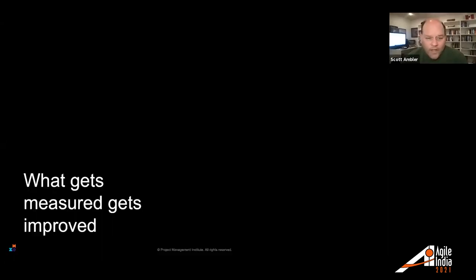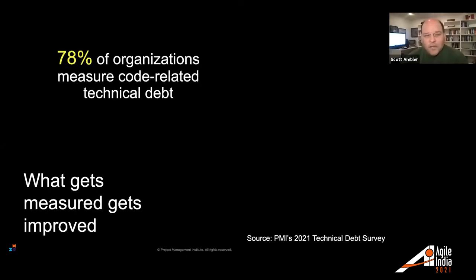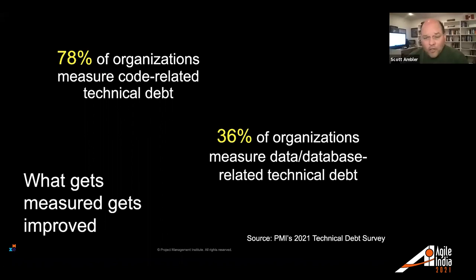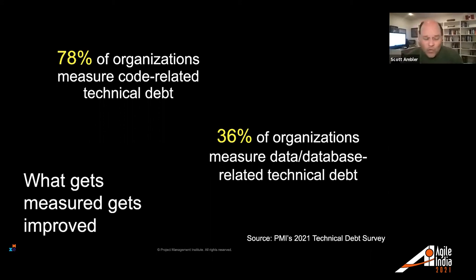What gets measured gets improved. 78% of organizations measure code-related technical debt, but only 36% are measuring data or database technical debt. We have a blind spot on the data side of things. Even though it's a $3 trillion a year problem for the United States, only a third of organizations are measuring this — and that's a bit problematic.